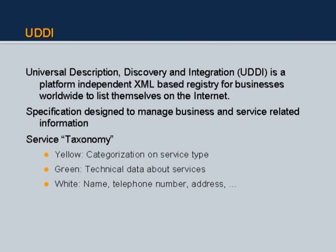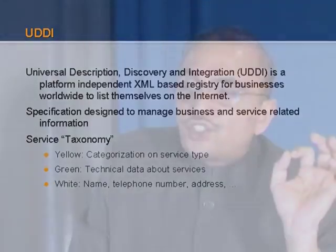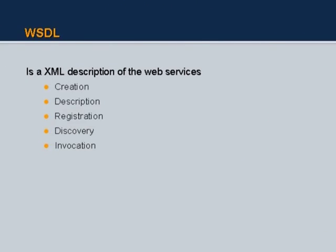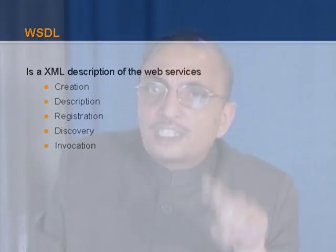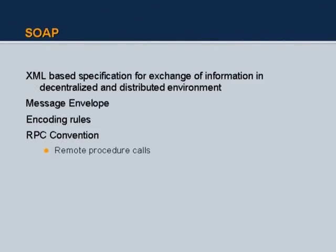Let us quickly revisit these three standards. UDDI is about the registry — subscribing and discovering services. WSDL is the web services description language used to describe, register, discover, and invoke services; programming in WSDL is essential for anyone wanting to integrate applications. Last is SOAP, the basic protocol, though it is not necessarily the most efficient — in specific situations you may use some other protocol.